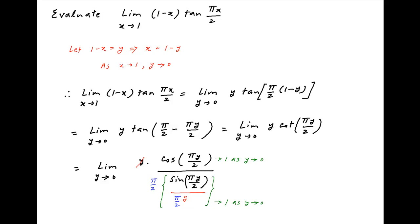Therefore the value of the given limit is equal to 1 upon (pi upon 2), which is equal to 2 upon pi, which is the required answer.